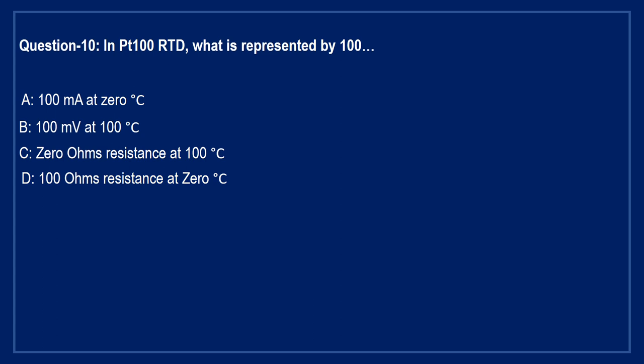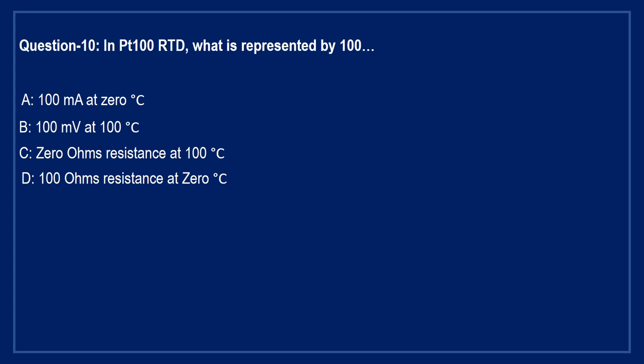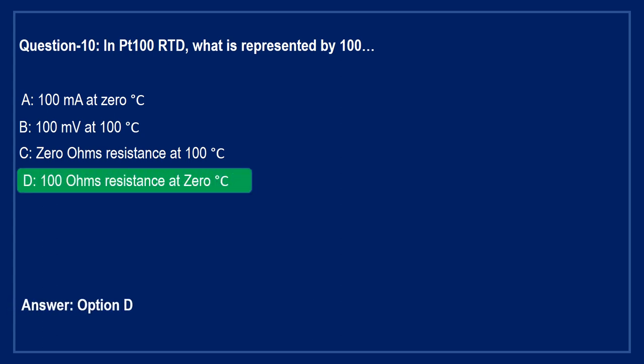Next question: in PT-100 RTD, what is represented by 100? Option A: 100 milliampere at 0°C. Option B: 100 millivolt at 100°C. Option C: zero ohms resistance at 100°C. Option D: 100 ohms resistance at 0°C. The right answer is Option D — in PT-100 RTD, it gives 100 ohms resistance at 0 degree centigrade.